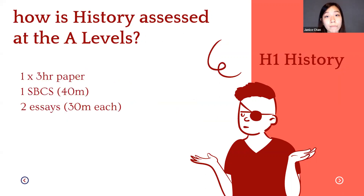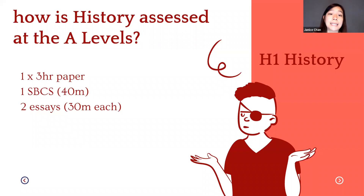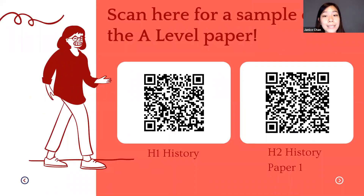For H1, the format of the paper is exactly the same, except you will only have to take one three-hour paper. For the H1 source-based, you have five sources to deal with as compared to H2 which has six sources. Otherwise, the format of the paper is exactly the same. You can scan to look at sample A-level papers for both H1 and H2.